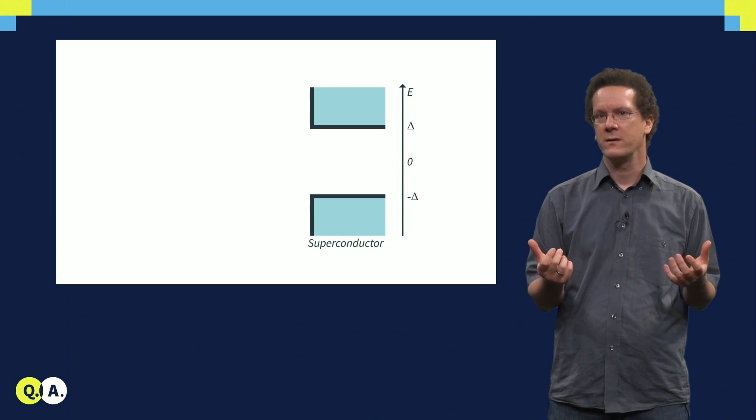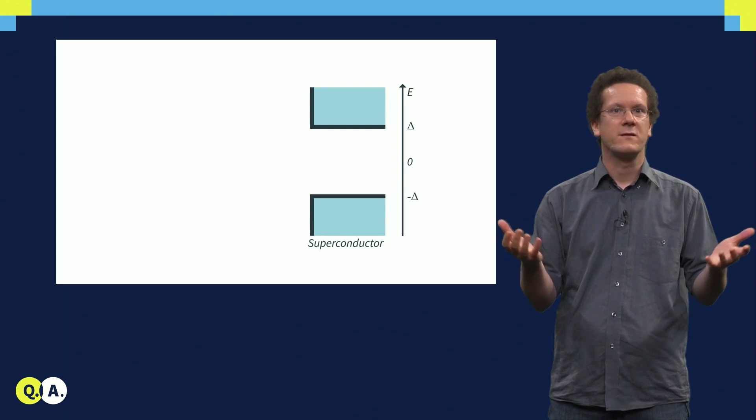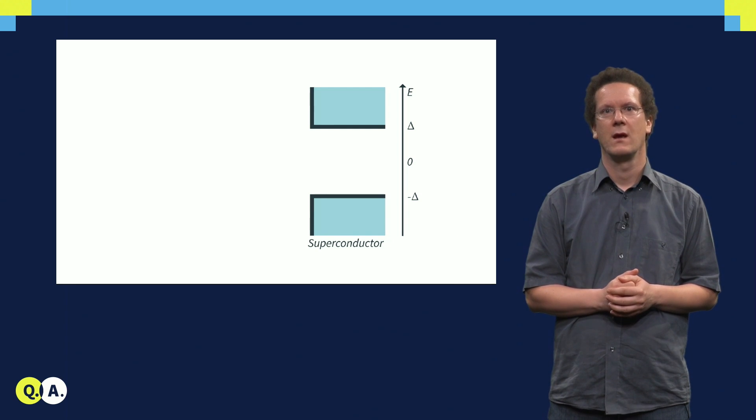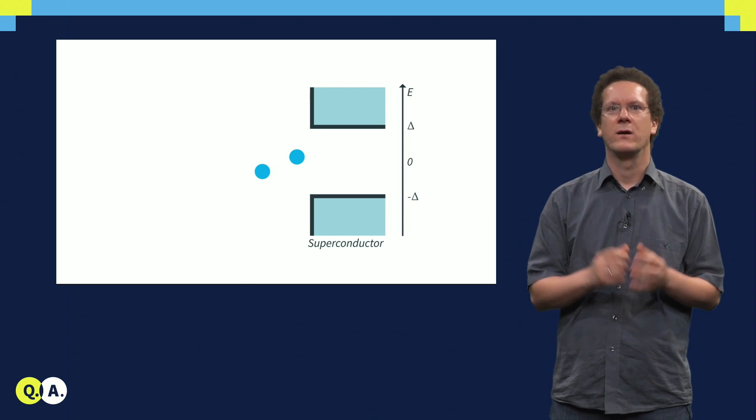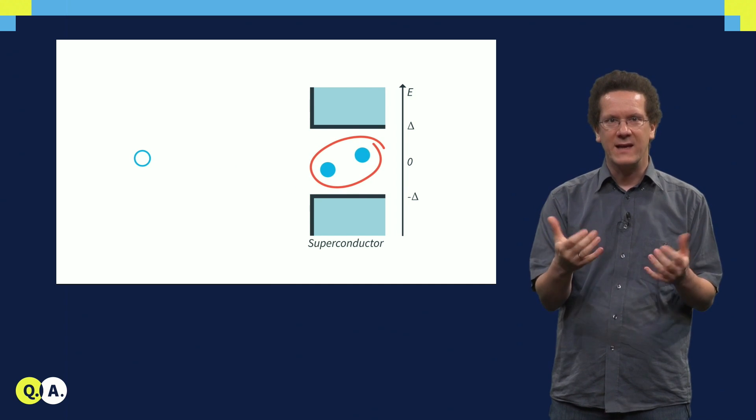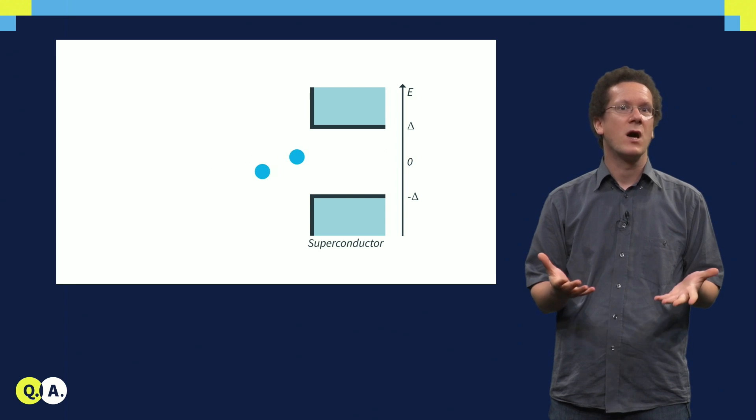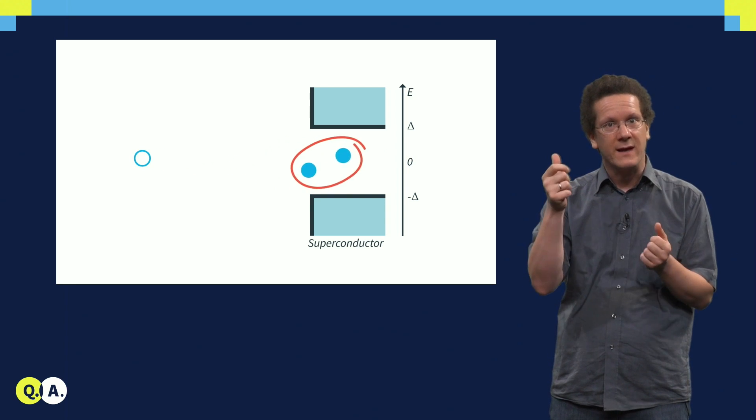If an electron comes there, naively one would say the electron is just reflected, but this would result in no current through the superconductor. We now have to remember that current in a superconductor is carried by Cooper pairs, which are pairs of two electrons. So when a single electron arrives at the superconductor, it can actually go into the superconductor as a Cooper pair, but it needs a second electron.